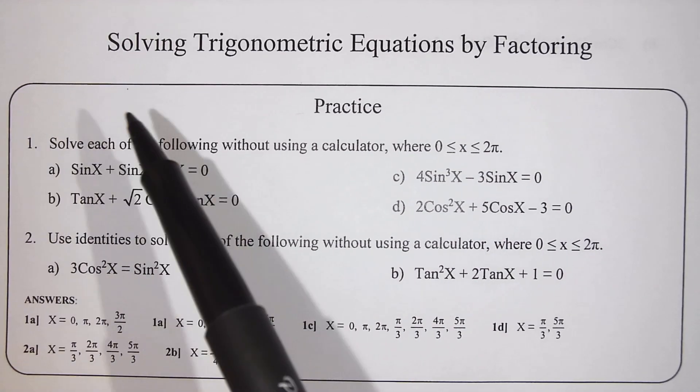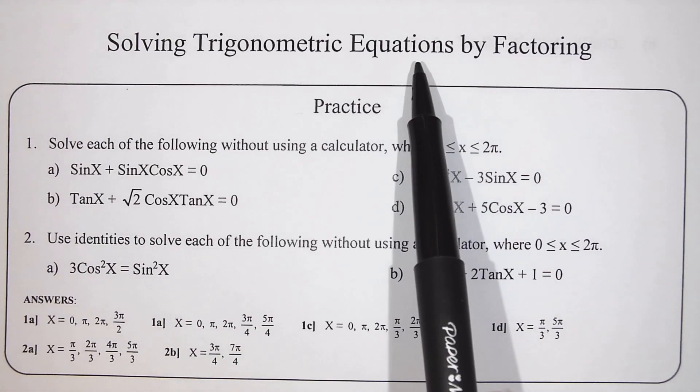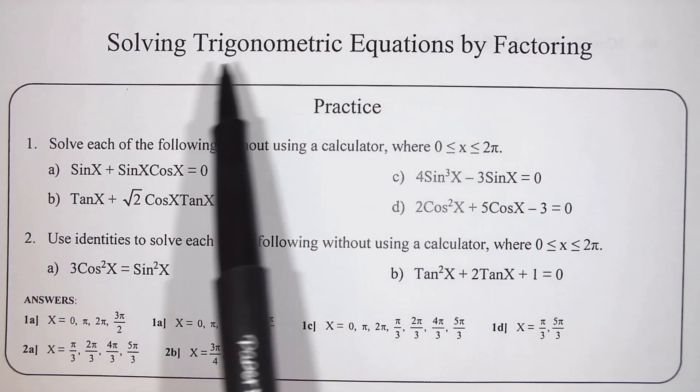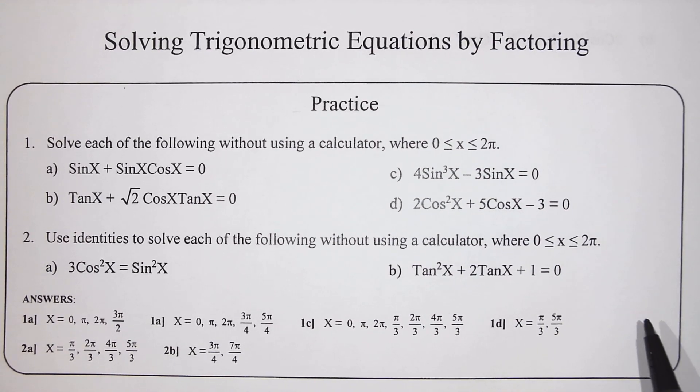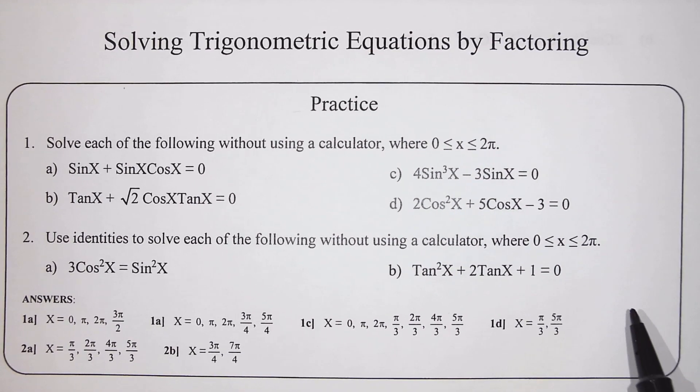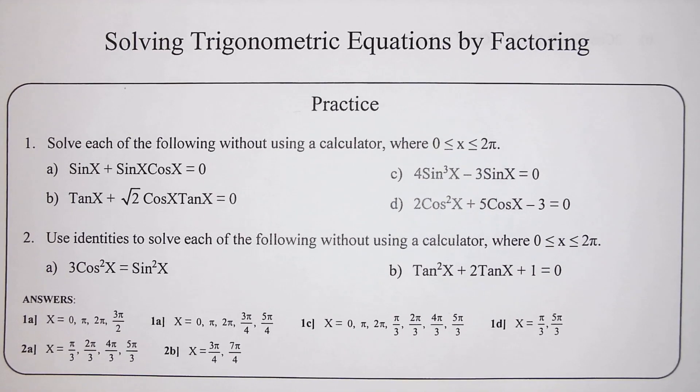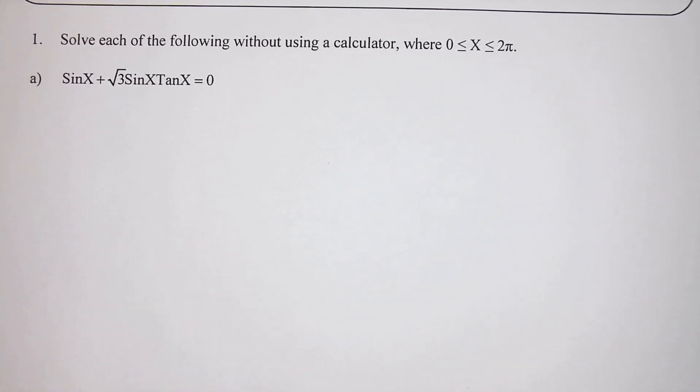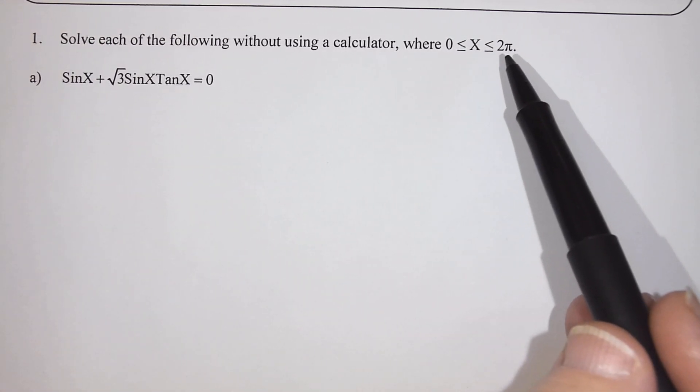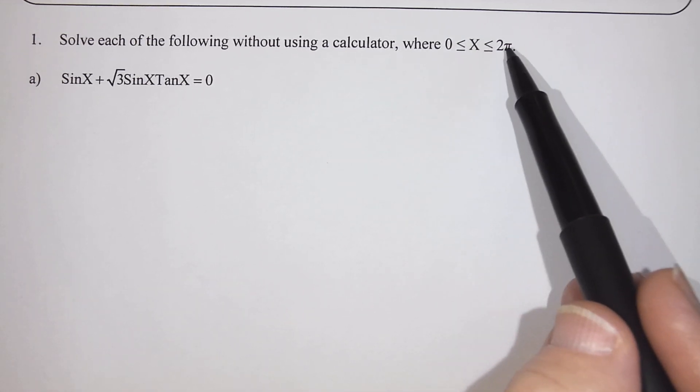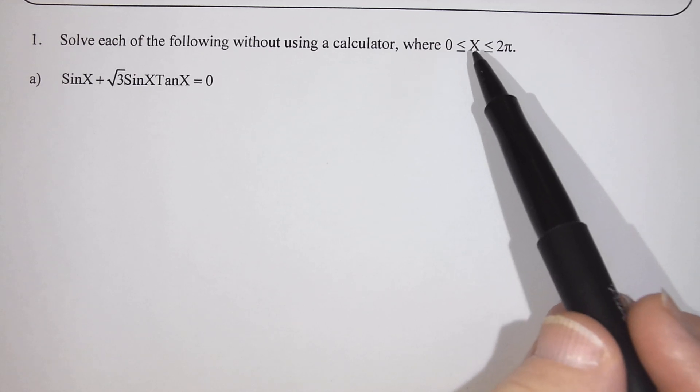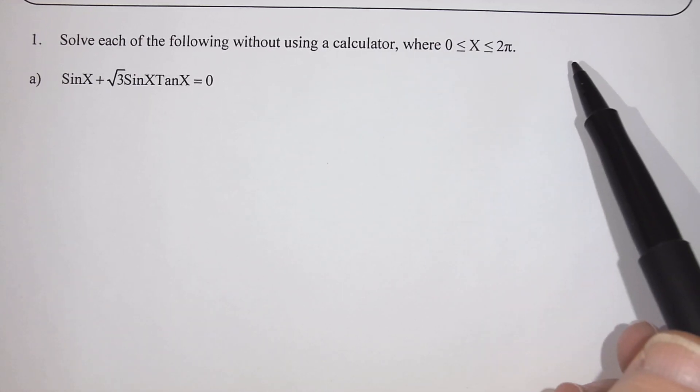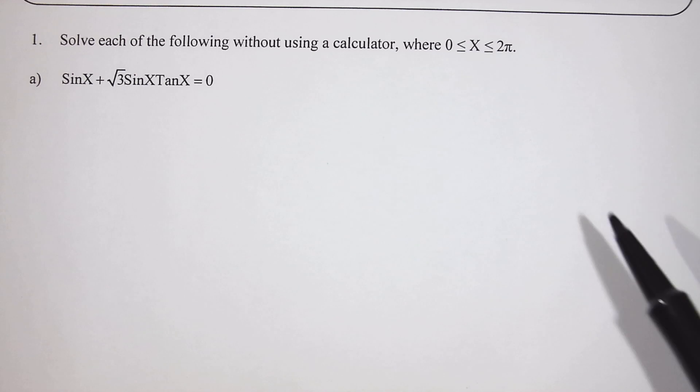In this video we are going to talk about solving trigonometric equations by factoring. You will notice that the homework questions are at the top of the front side of the page. Our first question says solve each of the following without using a calculator, where 0 ≤ x ≤ 2π. So this part, the x between 0 and 2π, tells me that we are looking at either one cycle of the graph or one circle around the four quadrants.